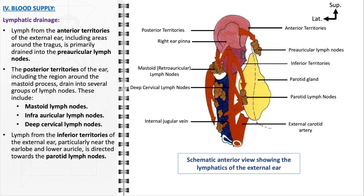Additionally, lymph from the inferior territories of the external ear, particularly the regions near the earlobe and the lower auricle, is channeled towards the parotid lymph nodes, which are situated near the parotid gland and play a significant role in draining the lower parts of the ear.